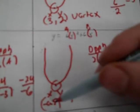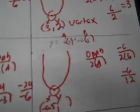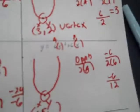To find y, I replace the x's with negative 0.5. So: 6 times negative 0.5 to the second power, plus 6 times negative 0.5 — and that gives me negative 1.5. So the vertex is (negative 0.5, negative 1.5).